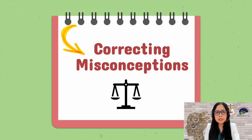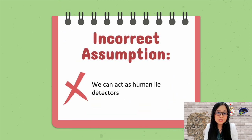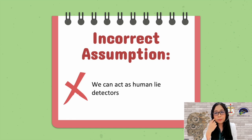Now let's proceed to correcting misconceptions about forensic evaluations. The first misconception is that we can act as human lie detectors — that is, of course, not true. We can only evaluate for inconsistencies, clarify some statements, and report those inconsistencies to the court.